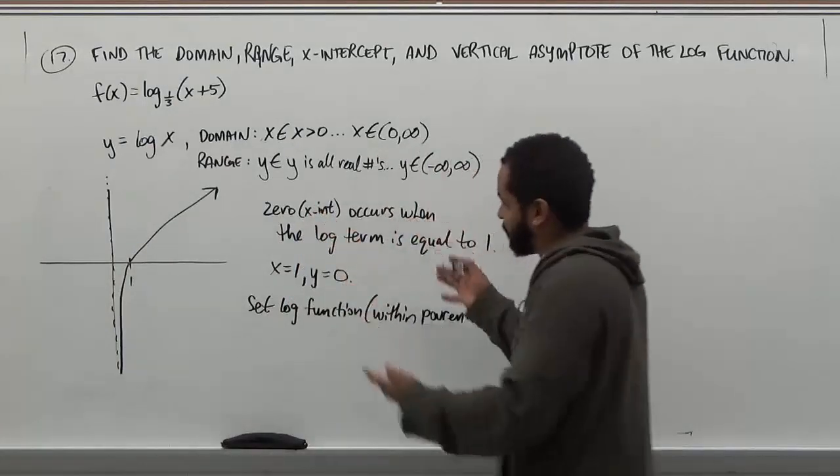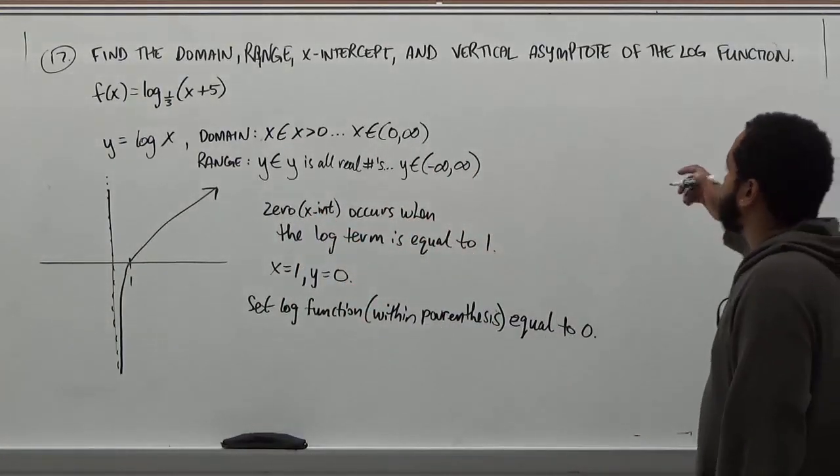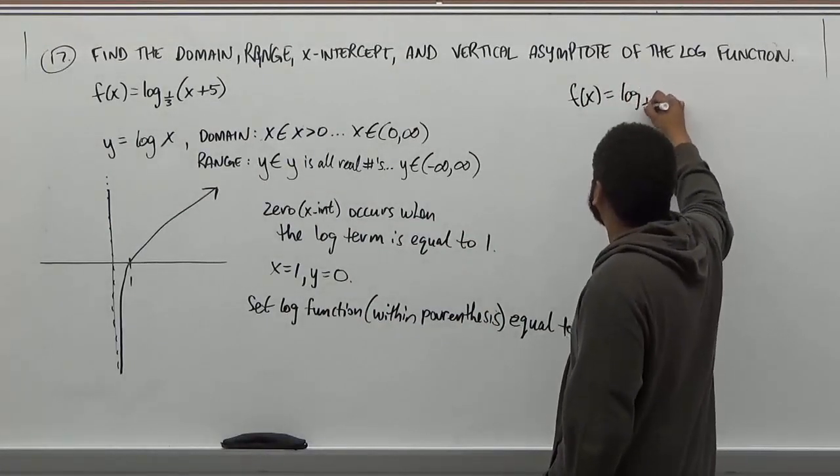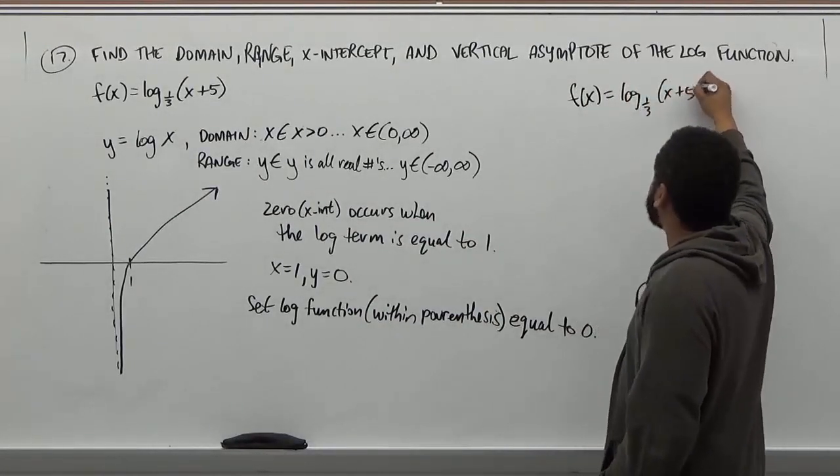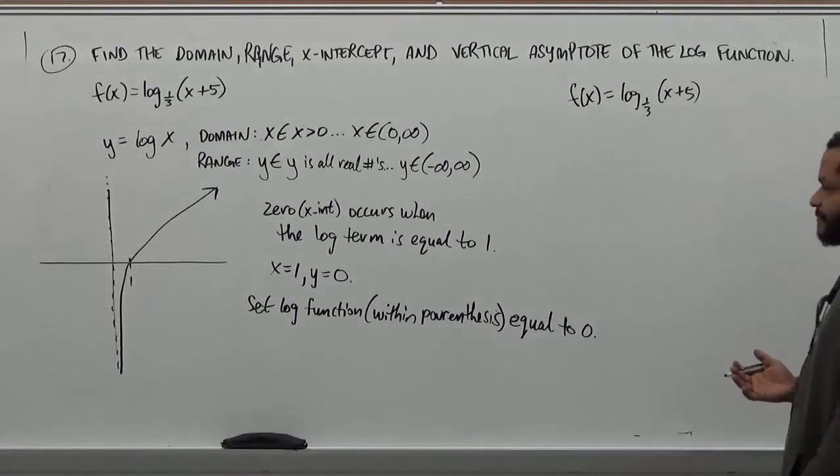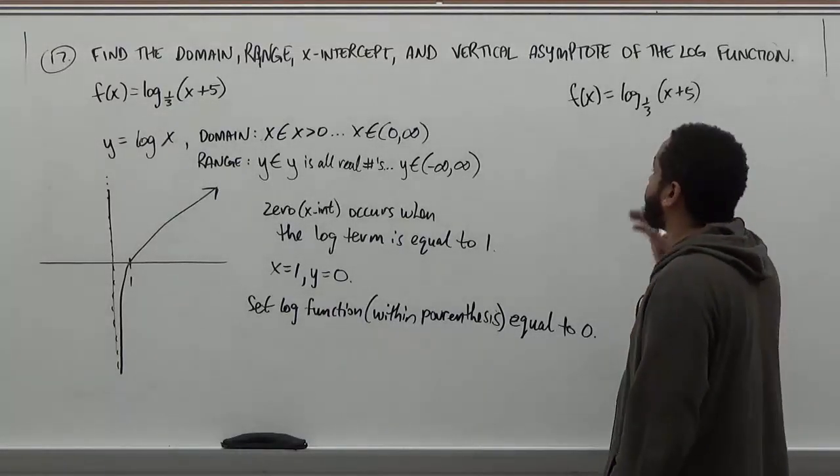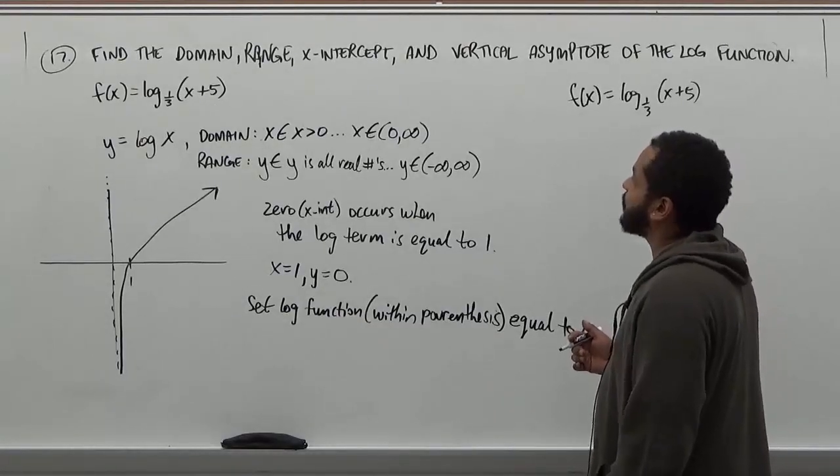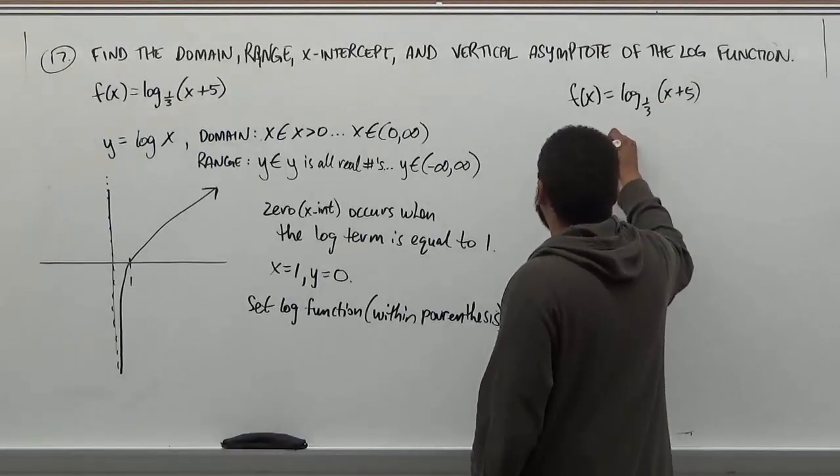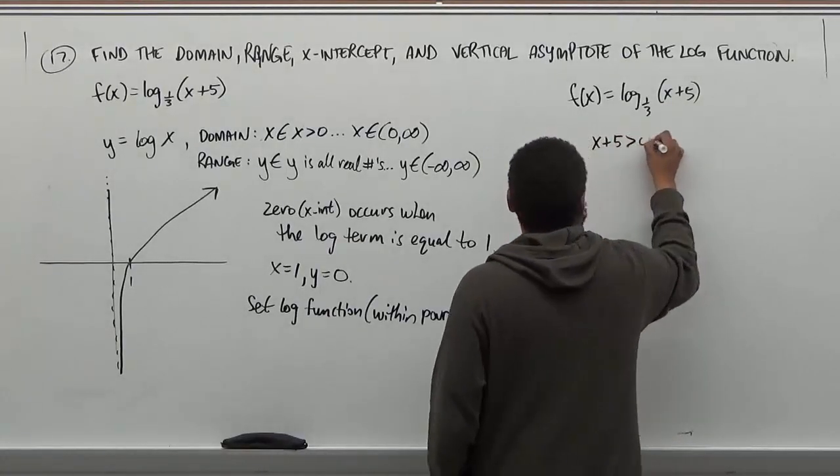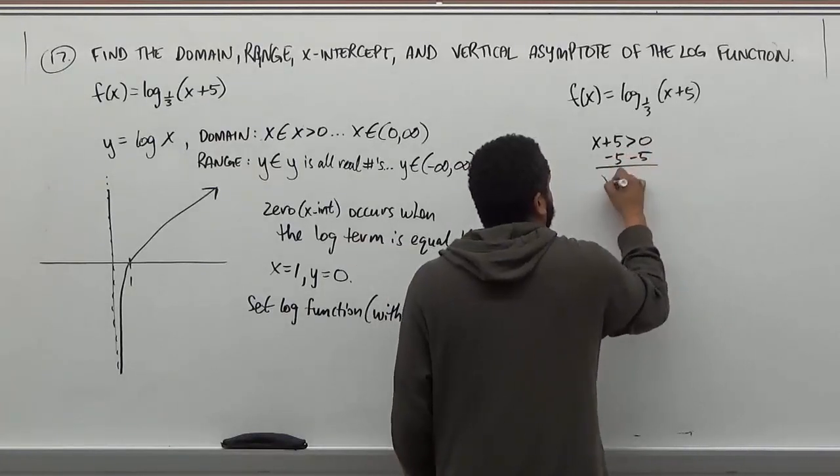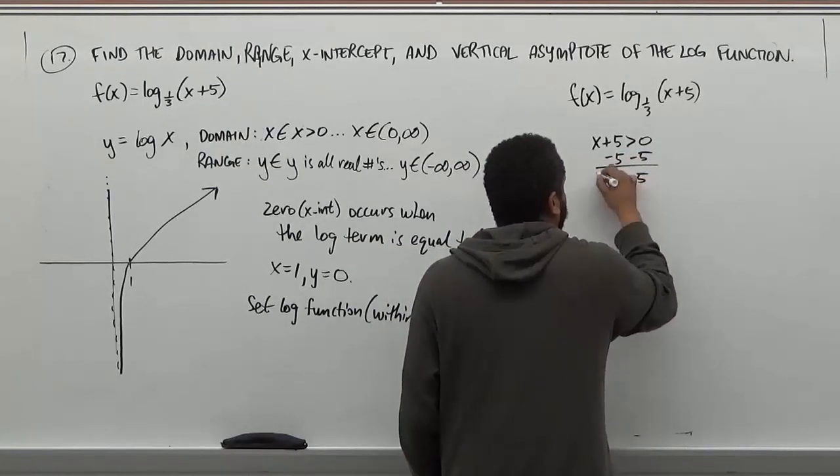Again, our function f(x) is equivalent to log base one-third of (x+5). And what we want to do is solve first the domain, the range, the x-intercept, and then finally the vertical asymptote. So here, solving for our domain of the function, we know that x+5 must be greater than zero to find our domain. And when we solve this, we get x is greater than -5. Here's our domain.